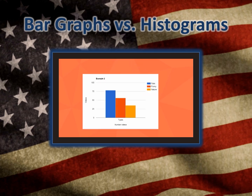In another example, the categories are types of videos and the number of videos in each type. Again, notice the bars don't touch.